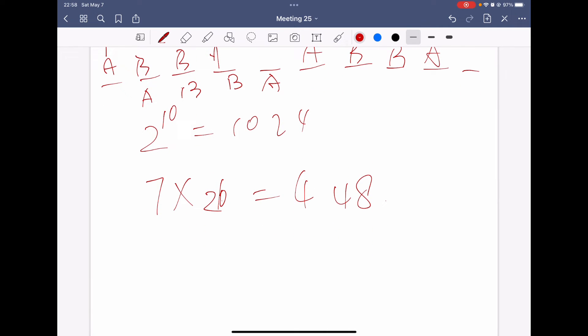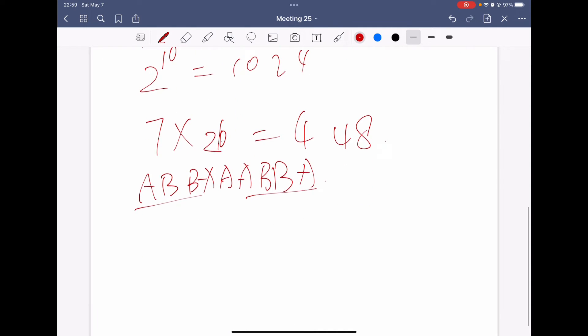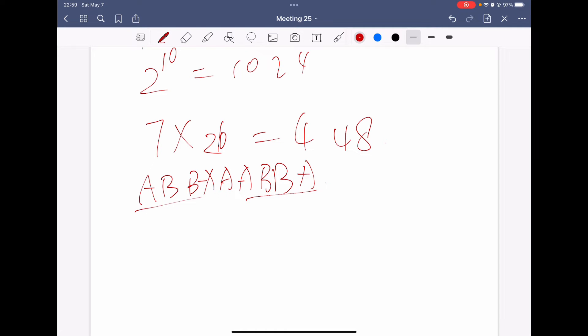However, it's not the final answer, because this counts some strings more than once. For example, A, B, B, A, A, B, B, A. So, there are two A, B, B, A occurring in this string, and we counted it twice. So, we need to eliminate this kind of situation to get the correct answer.